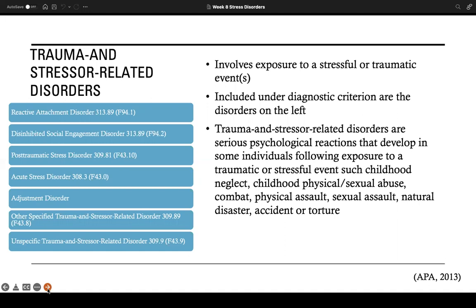And on the left here, we have all the disorders listed under trauma and stress-related disorders in the DSM-5, which are: reactive attachment disorder, disinhibited social engagement disorder, post-traumatic stress disorder, acute stress disorder, adjustment disorder, other specified trauma and stress-related disorder, and unspecified trauma and stress-related disorder.